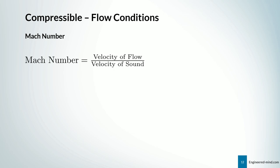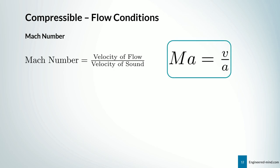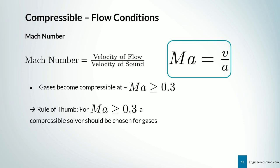For compressible flow there is a characteristic number: up to a certain point we can use the incompressible assumption, and above a threshold we must use the compressible module. That threshold is the well-known Mach number, which is the velocity of flow divided by the velocity of sound, denoted MA or simply M = V/A. As a rule of thumb, gases become compressible at Mach ≥ 0.3, so a compressible solver should be chosen for gases above that value.